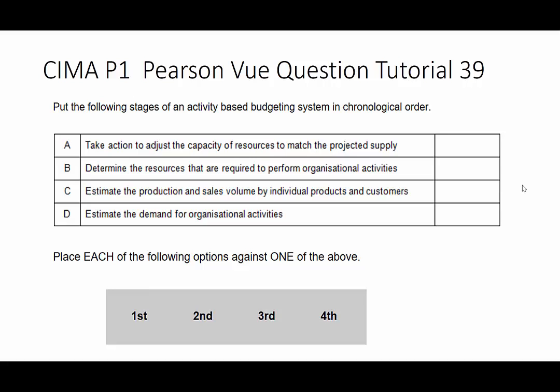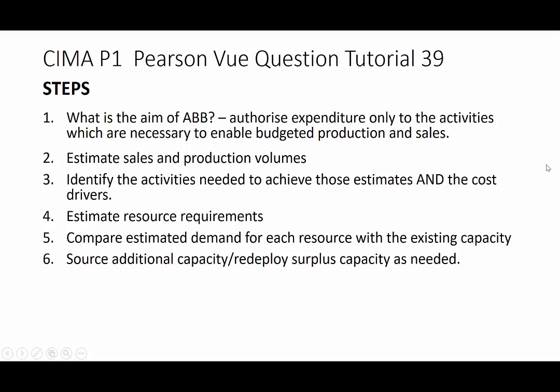We've got to put the following stages of an activity-based budgeting system into chronological order. We need to know when each of them is happening, and we simply move the first, second, third, and fourth onto the table and then move on to our next question.